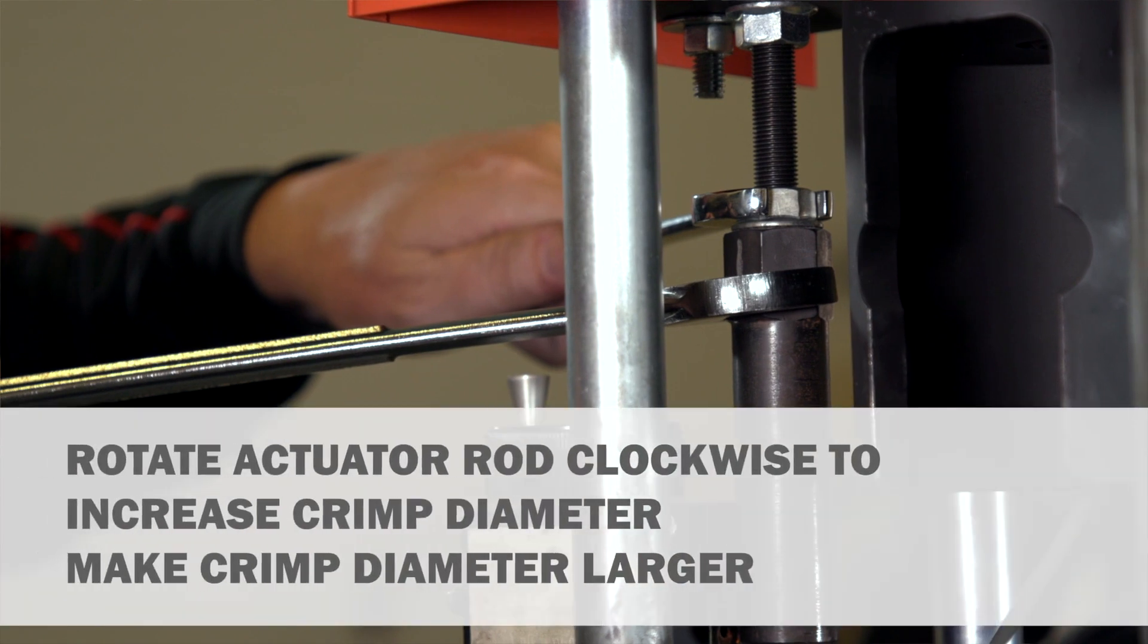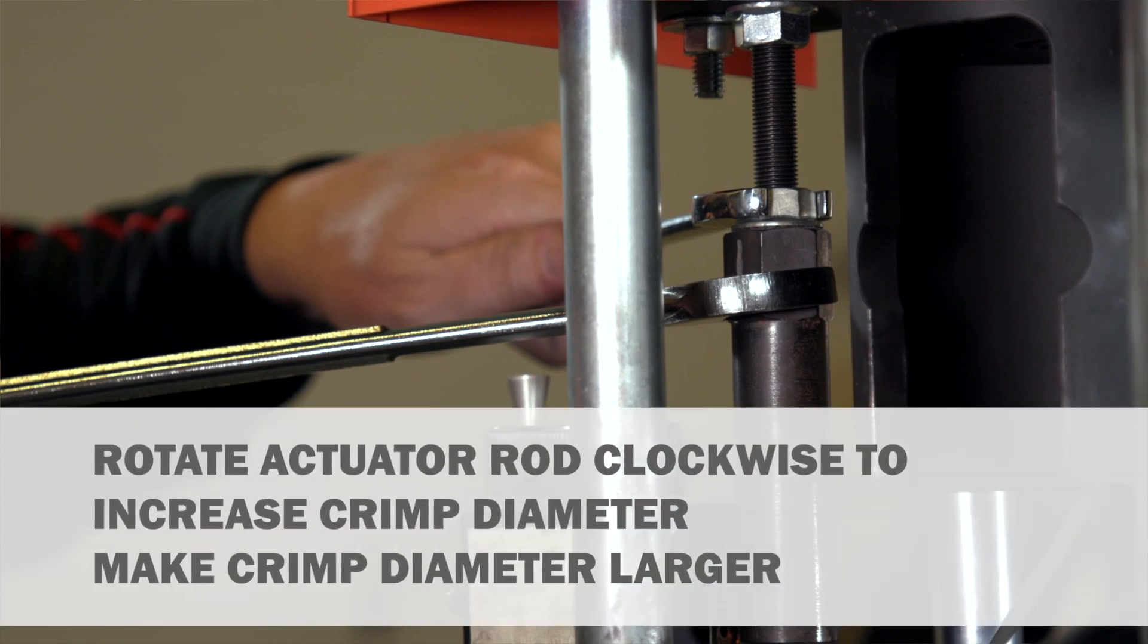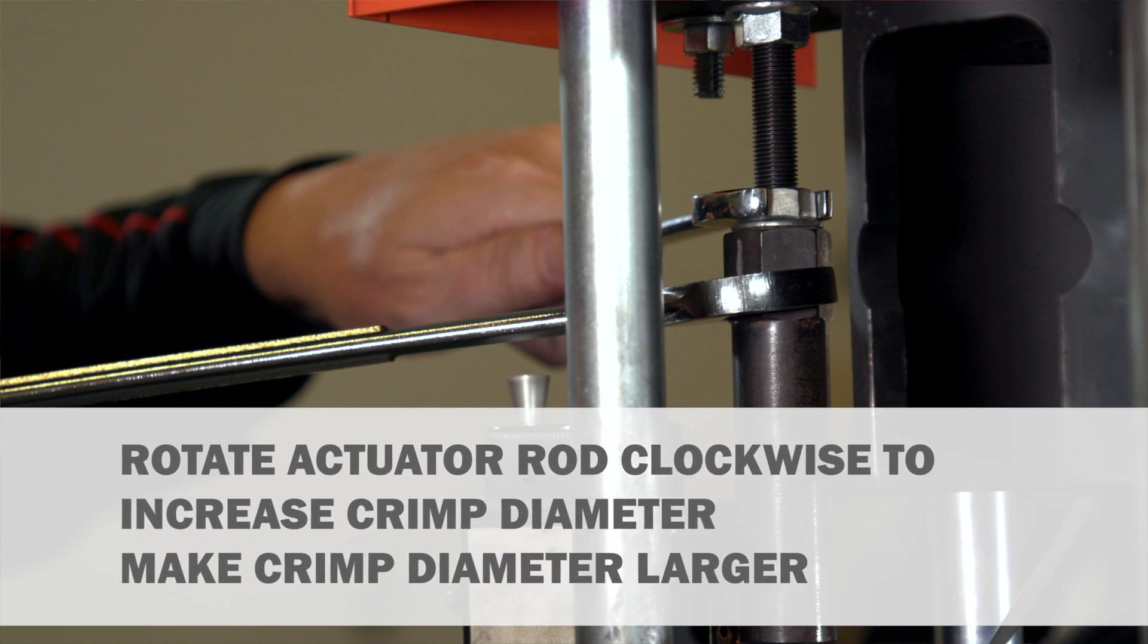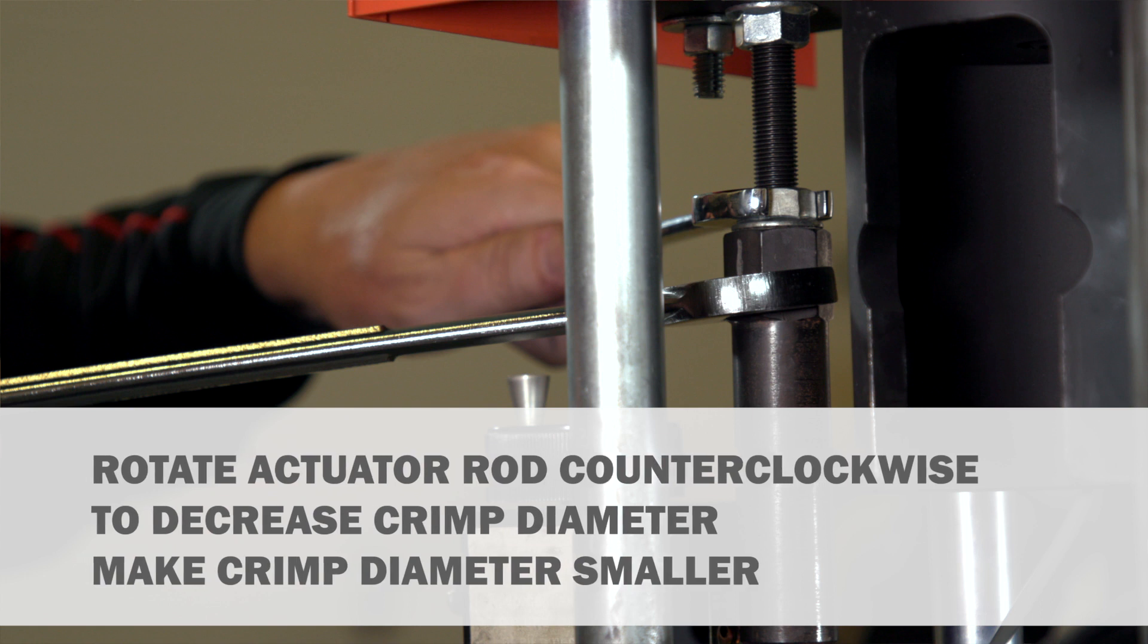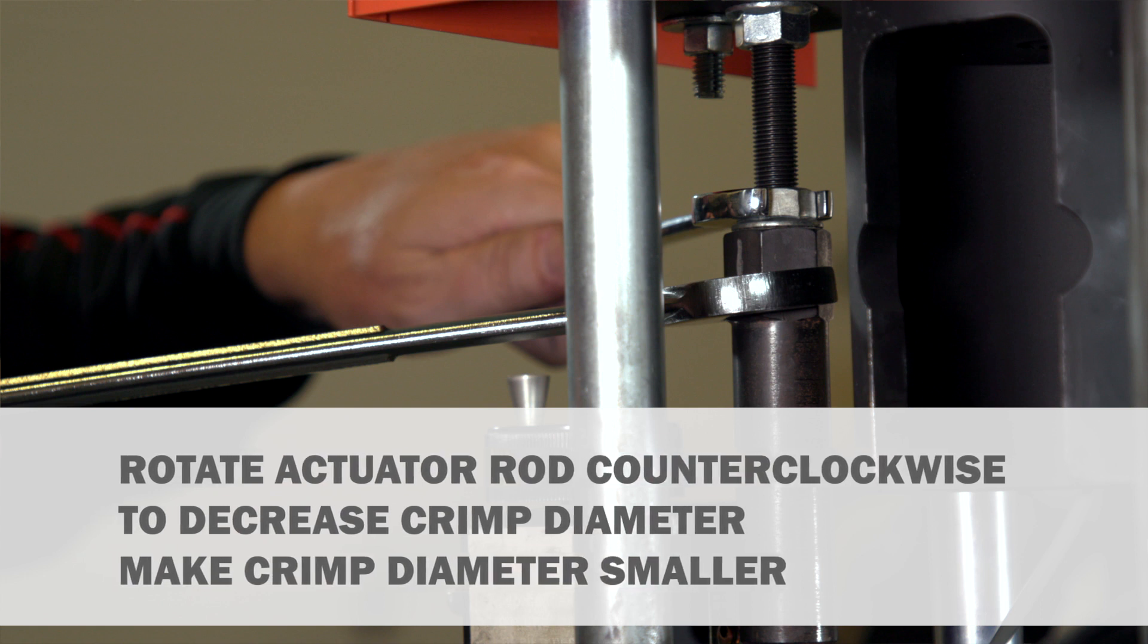Rotate the actuator rod clockwise to increase crimp diameter, that is, to make the crimp diameter larger. Or, rotate it counterclockwise to decrease crimp diameter, that is, make the crimp diameter smaller.